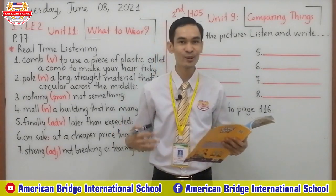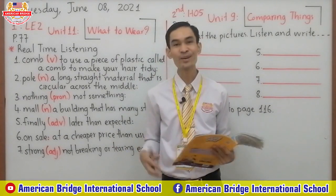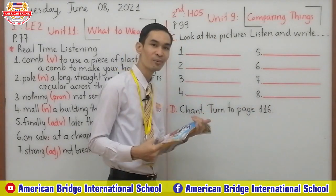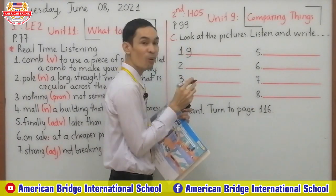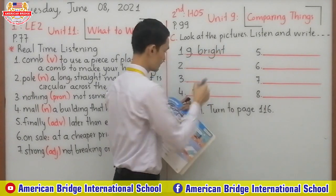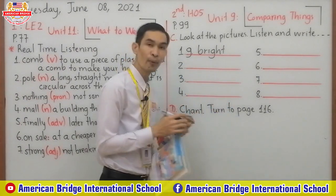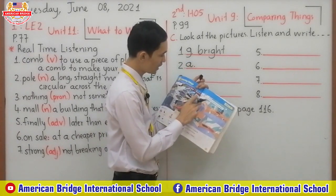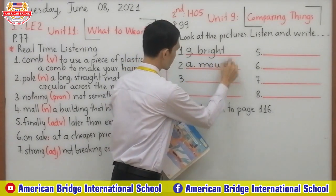Very good! Can you write the letter to the correct picture? I hope you can do it very well. So now let's check the answers with me. Number one — what letter, everyone? Letter G, right? Letter G is about the word 'bright.' Number one, letter G. How about number two? Letter A, right? Number two, letter A — that's about mouse, all of this we call mouse.